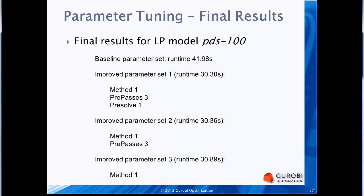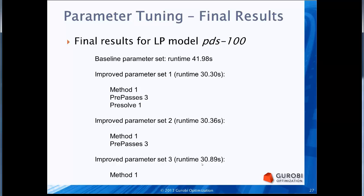Once the search is done, the tool presents final results. For LP model PDS100, the baseline runtime was around 42 seconds. The first result has a runtime of 30.3 seconds, changing the method, pre-passes, and pre-solve parameters. The second result has a runtime of 30.36 seconds, changing method and pre-passes. The third has a runtime of 30.89 seconds, changing only the method parameter. Given the baseline of 42 seconds and all results around 30-31 seconds, it's clear that method equals 1 — selecting dual simplex — is the key parameter setting.